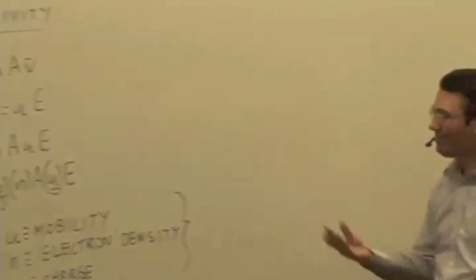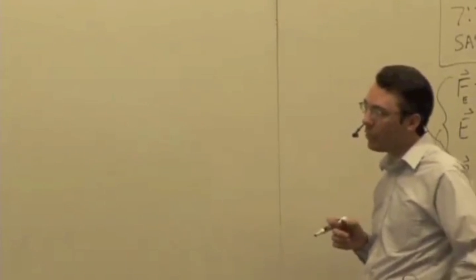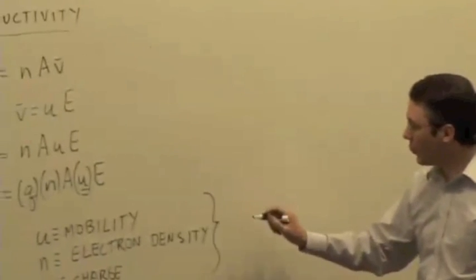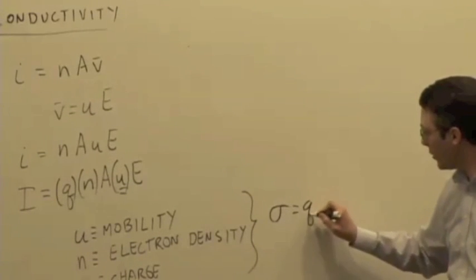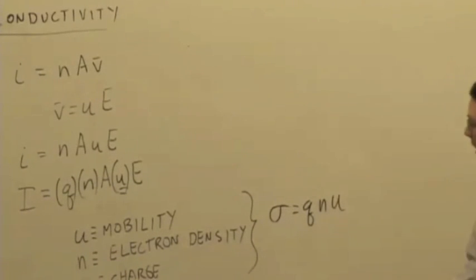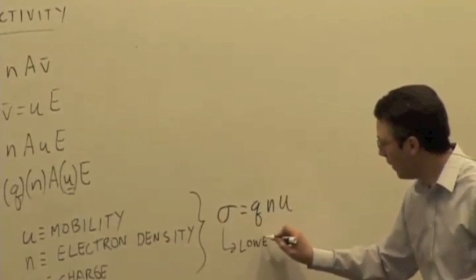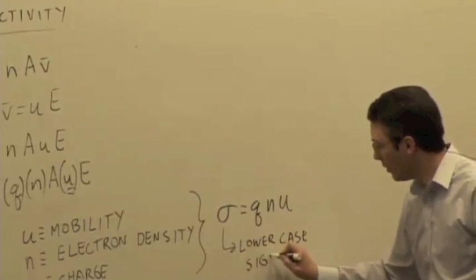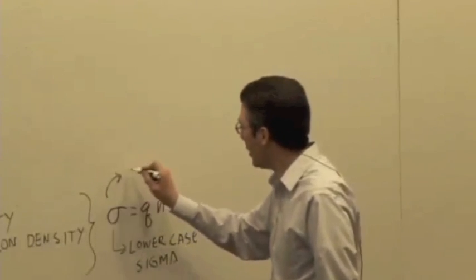Individually, they're tricky to measure. We can actually do it, and we'll see later when we get to magnetic forces a way to measure some of these quantities. But grouped as a whole, we can measure it more easily, and so we're going to define something. This is a Greek letter, lowercase sigma. It's like an O with a little curl on it. That quantity, Q times N times U, is called the conductivity.